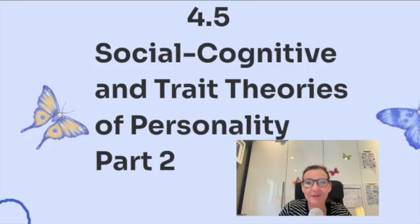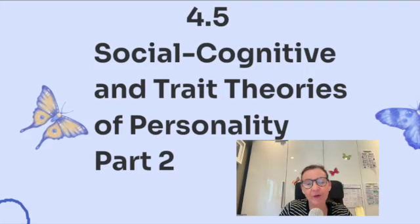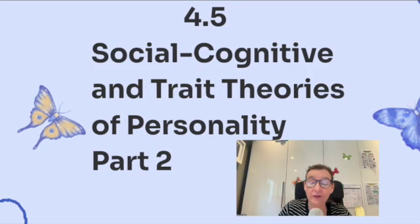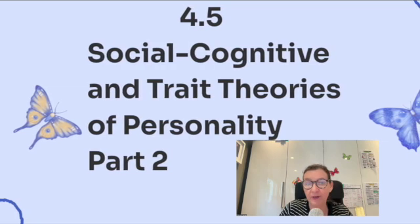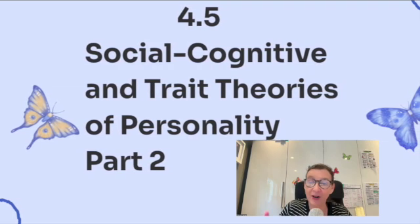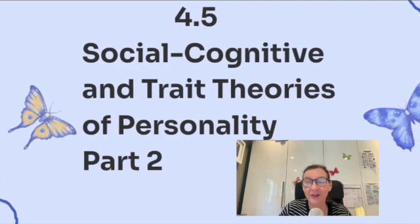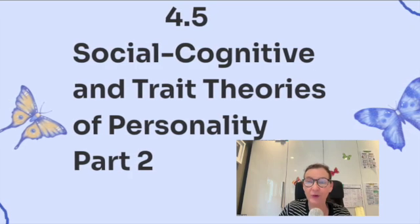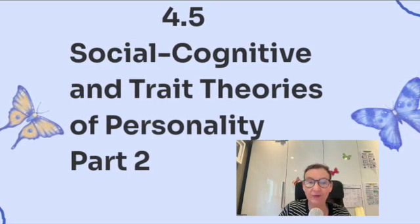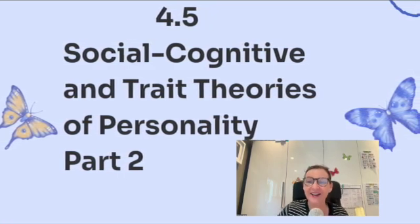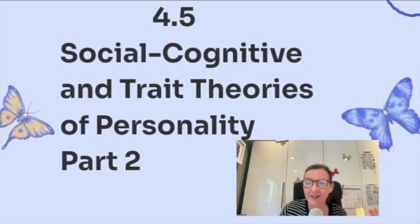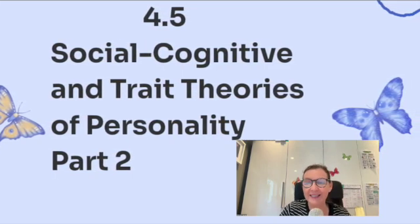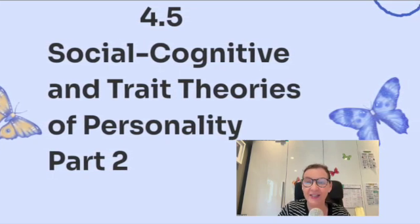Hi everyone, welcome back to Learn With Me. I'm Debra Hanson. Today we're going to be looking at AP Psychology 4.5, Social Cognitive and Trait Theories of Personality, Part 2. There are two CED questions for this section of Unit 4, so we're going to do two separate videos. The first is already done, so you might find that on my channel. And now we're going to look at the second CED question.